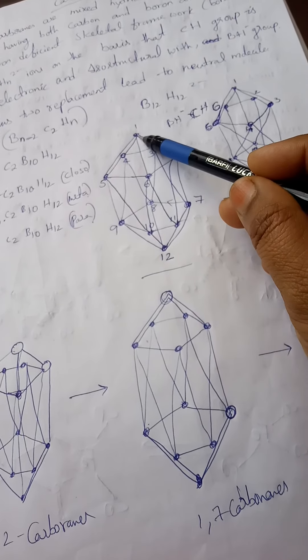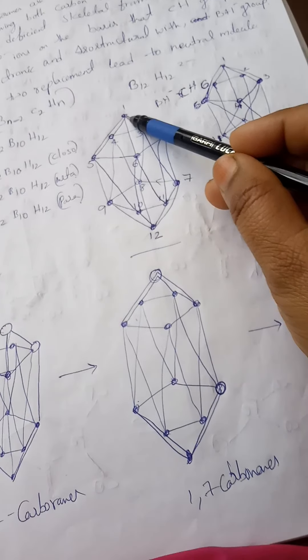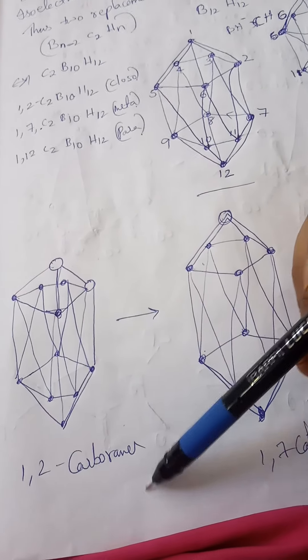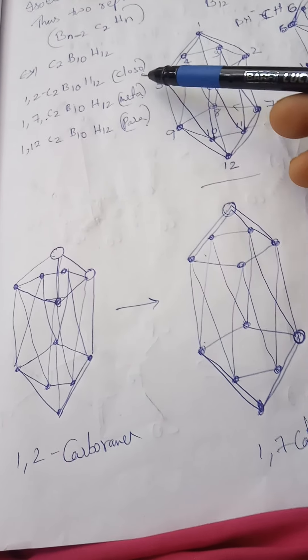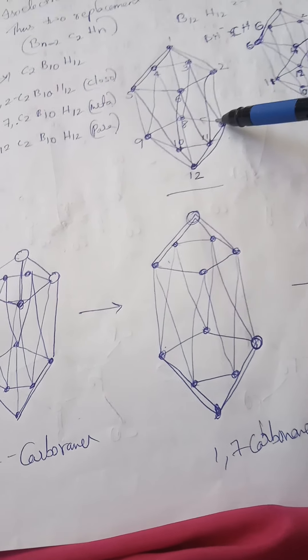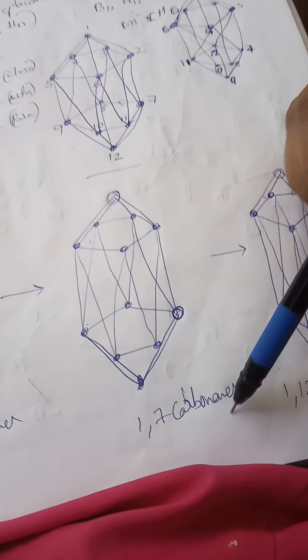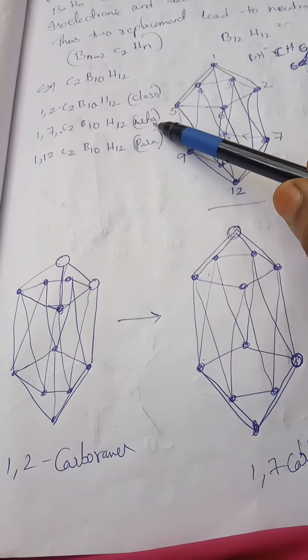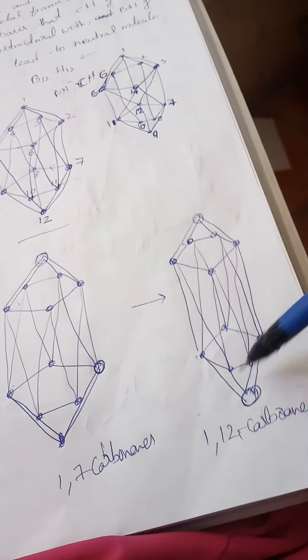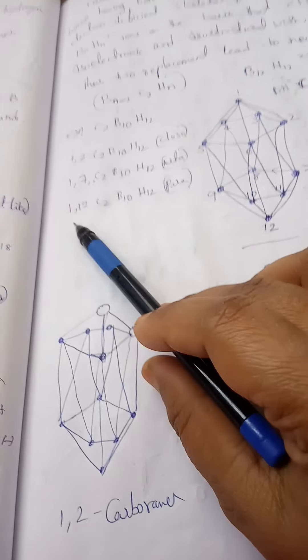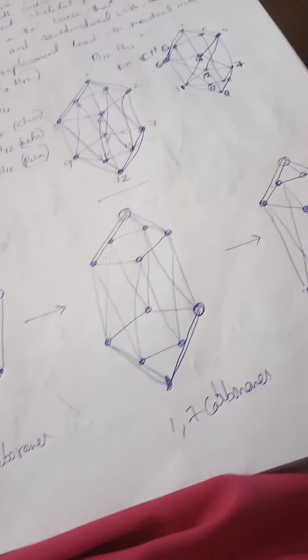In the carborane, if carbon atoms take positions 1 and 2, we replace by carbon atoms. This is called 1,2-carborane or ortho-carborane. When carbon atoms take 1st and 7th positions, it is called 1,7-carborane or meta-carborane. The next one is 1st and 12th position, called para-carborane: 1,12-C2B10H12.